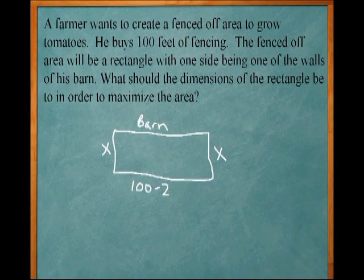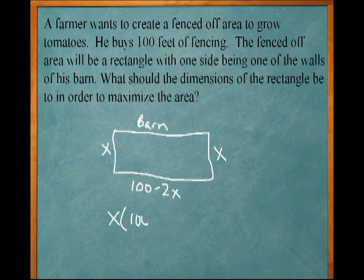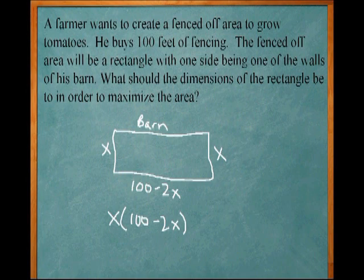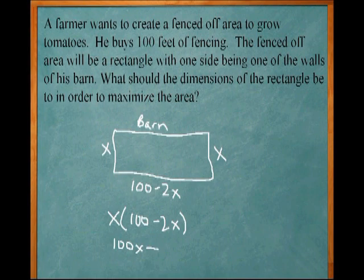Our three sides are X and 100 minus 2X. Now the area of this rectangle is going to be length times width, or X times 100 minus 2X. So our area is going to be X times (100 minus 2X). Multiply that out: it gives us 100X minus 2X squared.